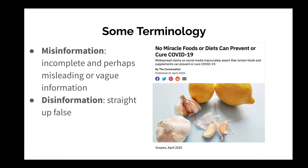Let's talk about some terminology you might have heard. First is misinformation — this is incomplete and perhaps misleading or vague information, whereas disinformation is straight up false. For example, there have been claims that you can prevent or even cure COVID-19 by consuming certain foods. This is absolutely disinformation and we will come back to this example later.